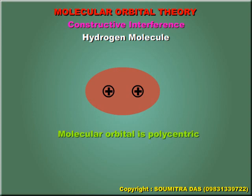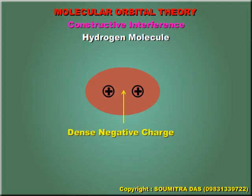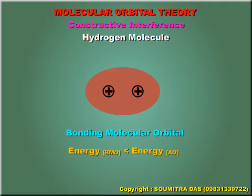Therefore, molecular orbital is polycentric unlike atomic orbital which is monocentric. The two nuclei are bonded together by the space which has dense negative charge. So, this molecular orbital helps in bond formation and is therefore called bonding molecular orbital. The energy of the bonding molecular orbital is less than combining atomic orbitals because the negative charge is more delocalized and is therefore more stable.